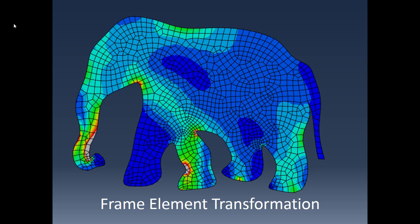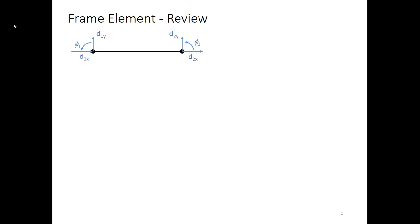This is the third in a series of videos looking at frame elements, formulating them as a new element type. In this video we will focus on how to take the frame element that was developed in its own 1D coordinate system and translate it or rotate it in order to be able to use it in two-dimensional space.